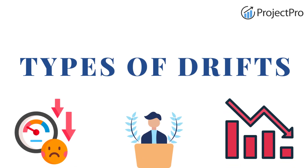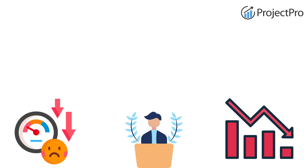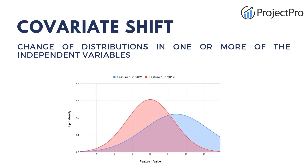There are various types of drifts, so let's learn about them one by one. The first one is covariate drift. When there is a change in distribution of one or more independent variables, that means there is a covariate shift. This happens due to environmental change, but the relationship between variables x and y remains the same — only the distribution of the independent variable x has changed. This graph shows the distribution of x in 2019 versus 2021, and you can see there is a change in distribution. For example, in a demographic change in user base, you trained your model on younger customers but now you have a lot of older customers as well, so there is an increase in mean and variance and the covariate shift happens.